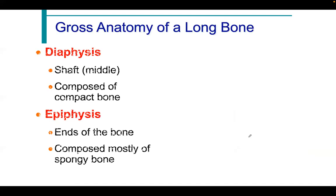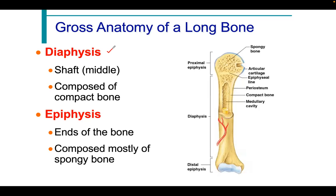For the gross anatomy of the long bone: the diaphysis (shaft) is composed of compact bone, while the epiphysis (the ends) is mostly spongy. Remember the letter E: Epiphysis is at the End, found distally. The medullary cavity of the diaphysis contains yellow marrow, which is mostly fat.